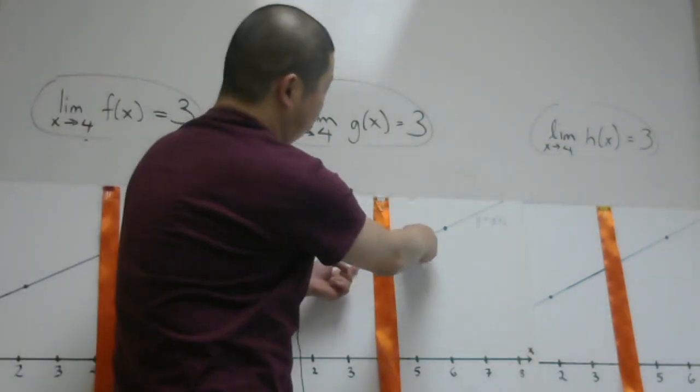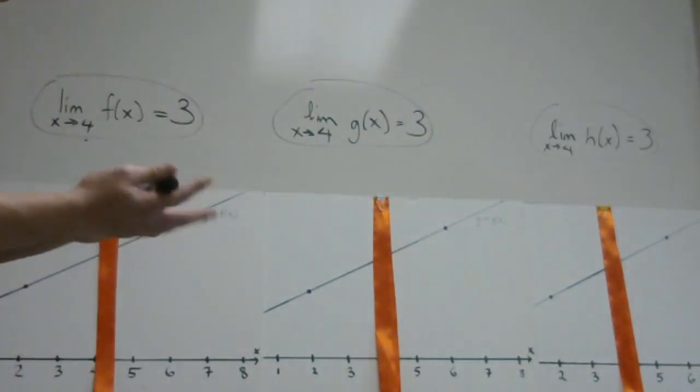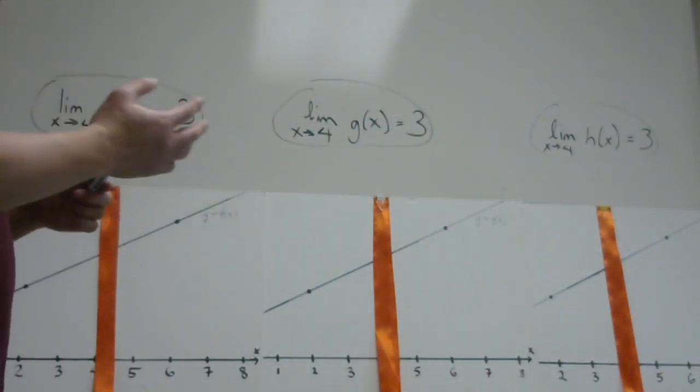Here again, we would predict that the y-value would be 3. And here as you move in, this way, that way, you'd predict again, by not looking under the ribbon, that the y-value would be 3.